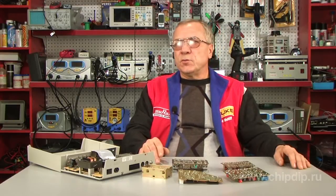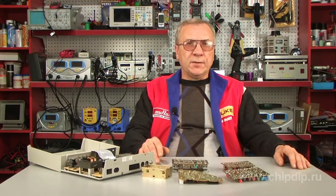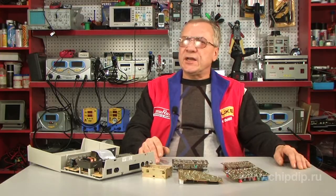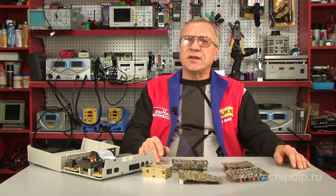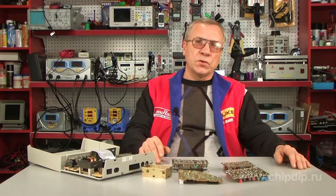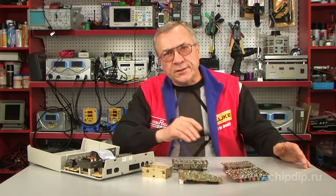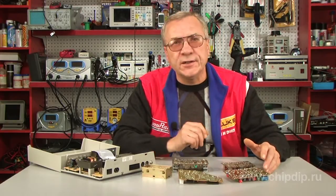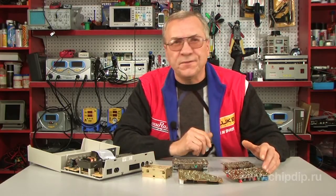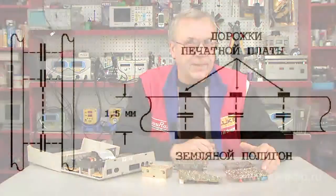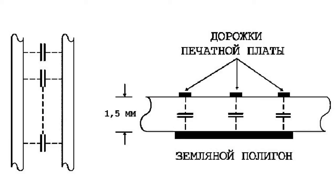Similarly to a regular capacitor formed by two parallel plates, parasitic capacitance occurs every time two conductors are placed next to each other, especially if in parallel and are not connected to each other or are not separated by a fair distance. Parasitic capacitance is generated on a circuit board between the parallel tracks.